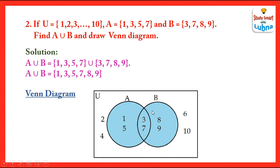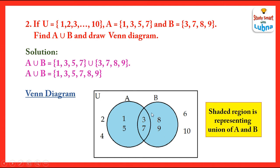Set B has elements 3, 7, 8, 9 written inside circle B. In the overlapping part, you can see 3 and 7, which are the common elements present in both set A and set B. The remaining elements of the universal set not present in set A or B — which are 2, 4, 6, and 10 — are written inside the rectangle. The shaded part represents the union of set A and B. To show the union through a Venn diagram, we shade sets A and B.